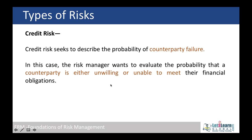Credit risk arises when we give loans to customers or sell goods on credit. We must determine whether the counterparty is able to pay us. Credit risk is typically analyzed by credit rating companies, which assign ratings such as AAA or A+++, depending on the company's liquidity position and its ability to pay under adverse conditions.